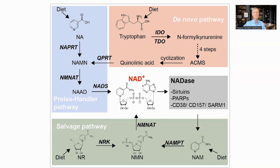How does trigonelline raise NAD, and how does it compare to the other precursors? NAD can be made in one of three pathways: de novo, Preiss-Handler, and the salvage pathway.